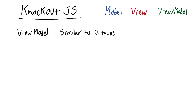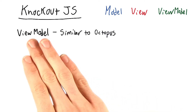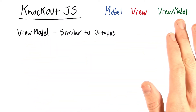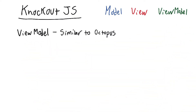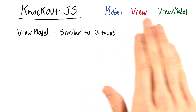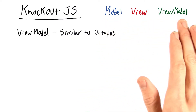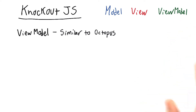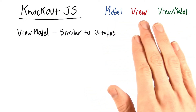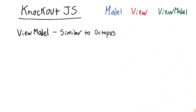Also keep in mind that the word 'view model' is one word in this case. So when we say MVVM, VM represents one term, not two: the model, the view, and the view model.